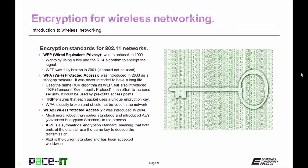WEP was replaced by WPA, Wi-Fi Protected Access, introduced in 2003 as a stopgap measure. It was never intended to have a long life. WPA was designed to be backwards compatible with equipment that could use WEP. It used the same RC4 algorithm as WEP, but also introduced TKIP, Temporal Key Integrity Protocol, in an effort to increase security. It was backwards compatible and could be used by pre-2003 access points. TKIP ensures that each packet has a unique encryption key, but WPA is still easily broken and should not be used in a network.